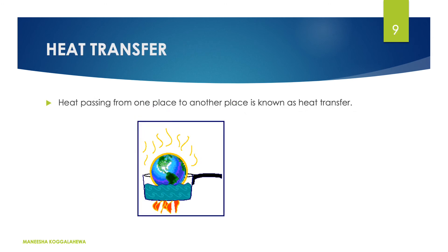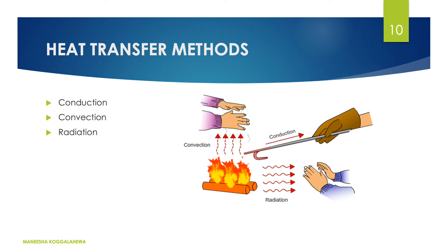Now heat transfer. What is the meaning of heat transfer? It is heat passing from one place to another. There are three ways of heat transmission: conduction, convection, and radiation. As I said, there are three main methods of heat transfer — conduction of heat, convection of heat, and radiation of heat.